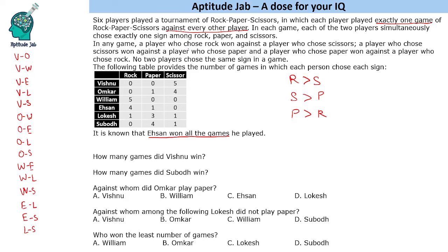Let's start with the extreme cases. Vishnu plays scissors in all games and William plays rock in all games. So we put S, S, S, S, S for Vishnu across all his games, and rock for William in all of his games.